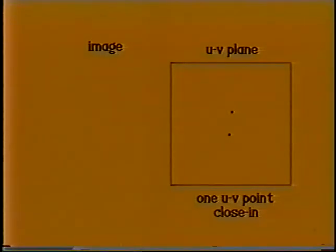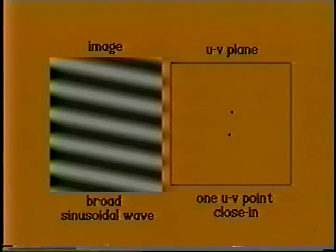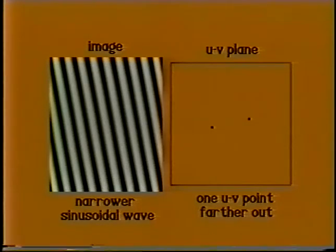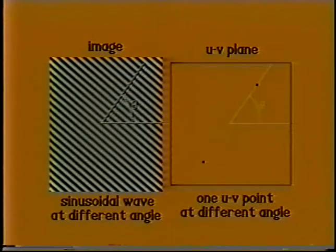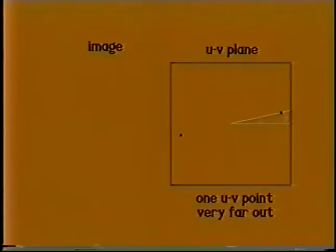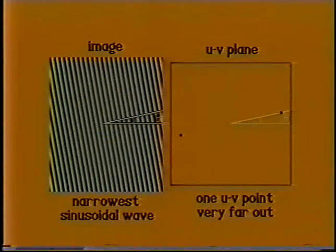A single point in the UV plane close to the center has a corresponding image that is a broad sinusoidal wave. A different point farther from the center has a corresponding image that is a narrower sinusoidal wave. If we select the UV point at a particular angle, the wave in its corresponding image has the same angle. These waves in the image are called Fourier components. Each UV point represents one Fourier component.